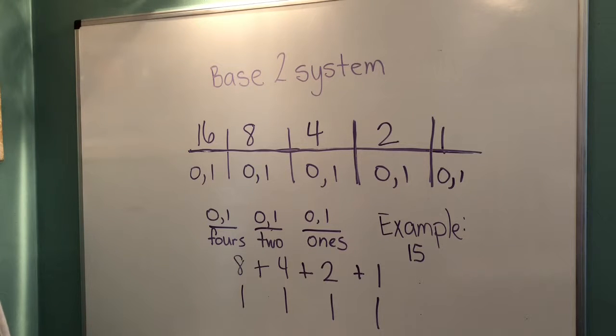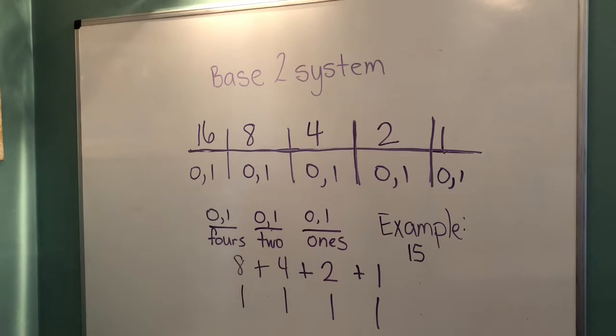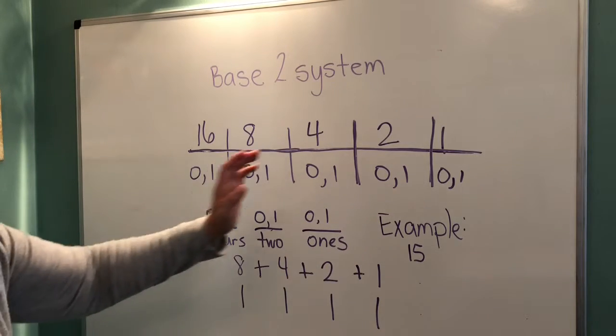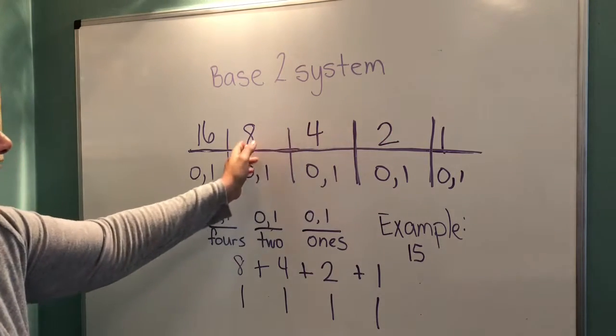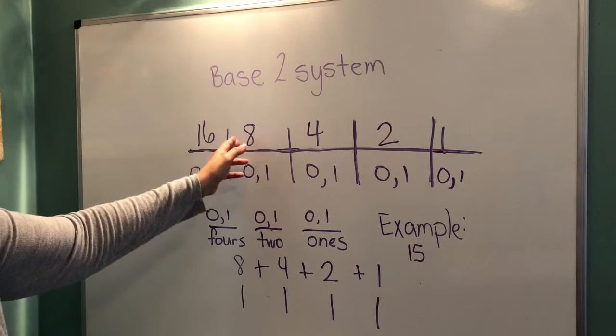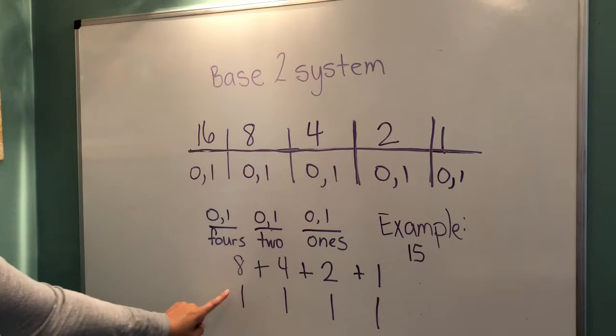Now, we're going to use the example number as 15. In order to find this number in the base 2 system, we start with the place value that is closest without going over to our number. So, we're going to say 1s, 2s, 4s, 8. 8 is the highest number. We cannot go to 16. We can't have one of those because that would go over our 15. So, we're going to say we need 1, 8.